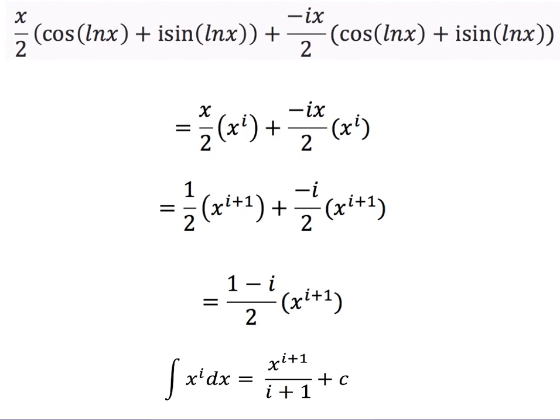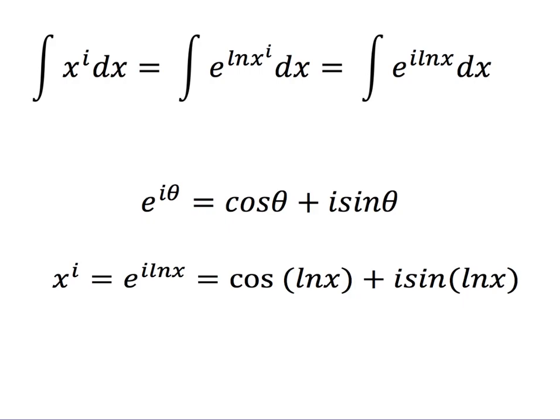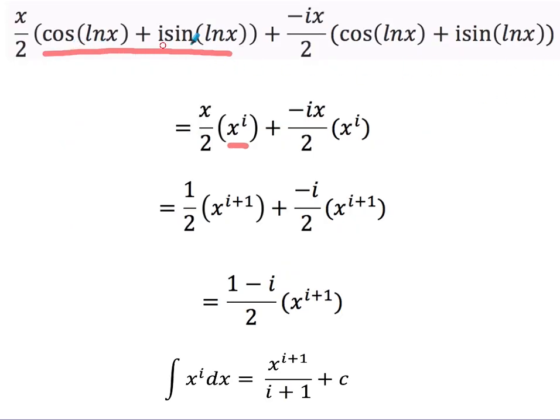Now, the reason I've done all that is because I can now have a very nice kind of simplification. Cos ln x plus i sine ln x. If you remember right from the start, this whole thing here is just equal to x to the i. x to the i is equal to cos ln x plus i sine ln x. So I've now made that substitution. All of this thing here is x to the i. And actually, all this thing here is also x to the i. So I've now got x over 2 x to the i plus minus i x over 2 x to the i.